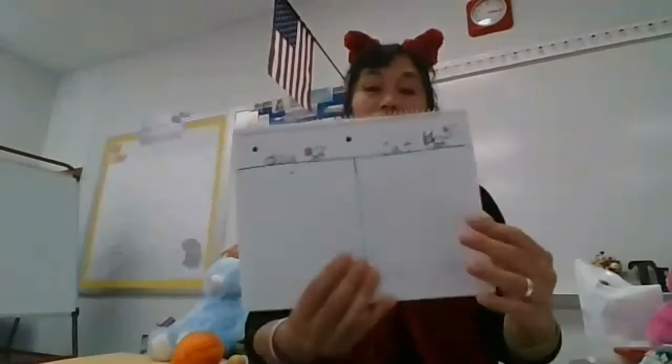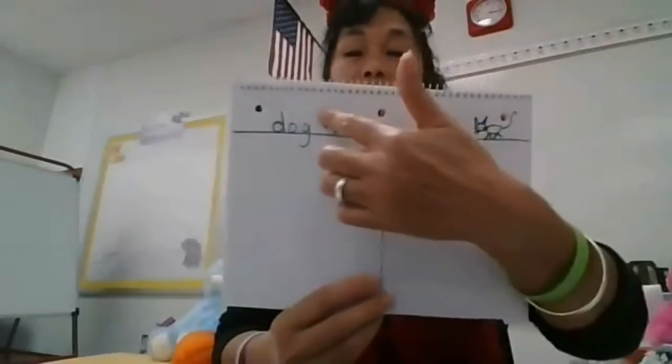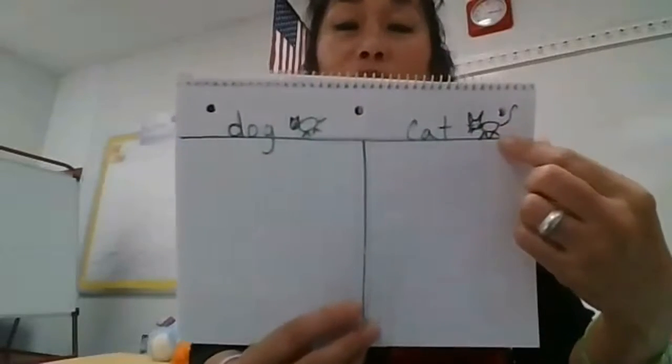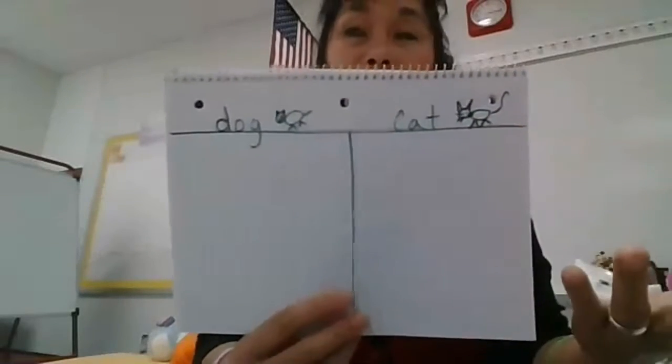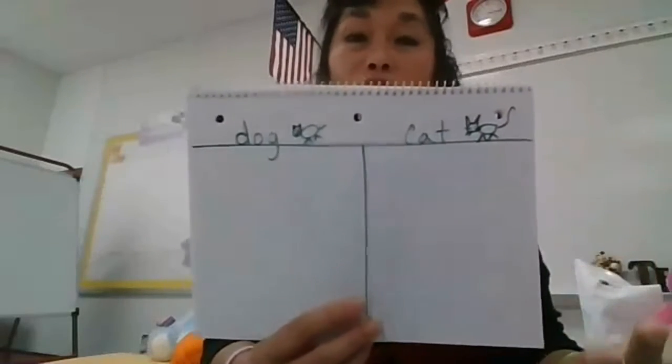I'm gonna draw my cat with a longer tail. Maybe that will help — and a longer ear and whiskers. So you've got dog on one side and cat on the other side, and you can choose anything.